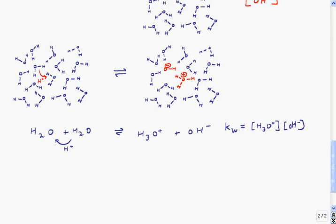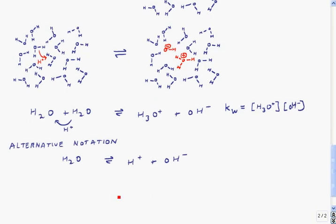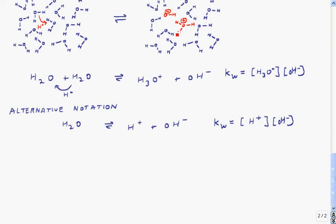An alternative notation is to ignore the fact that the proton exists as H3O-plus in water and just write it as H-plus, which means we have water going to H-plus and OH-minus. If we write the equilibrium expression for this reaction, we get something almost identical to that above except H3O-plus becomes H-plus. At room temperature, the value of KW is 10 to the minus 14. So the product of the concentration of H-plus times the concentration of OH-minus always has to equal 10 to the minus 14 in water.